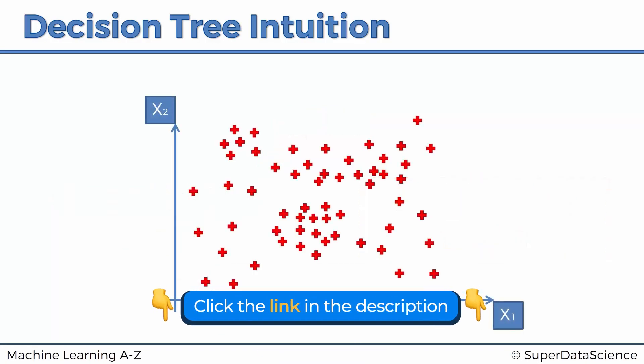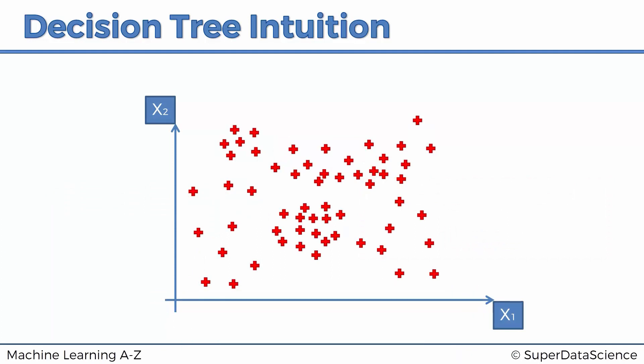So here we've got a scatterplot which represents our data set. The interesting thing about the scatterplot is that we've got two independent variables x1 and x2, and what we're predicting is a third variable, a dependent variable which is y.